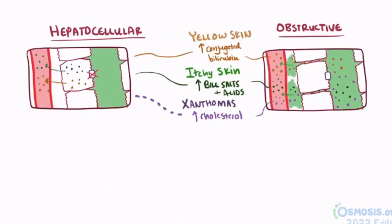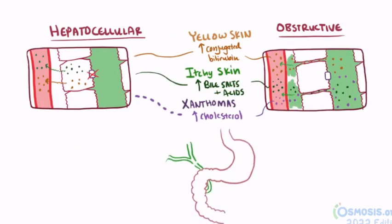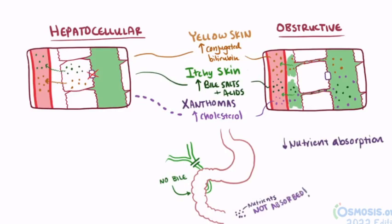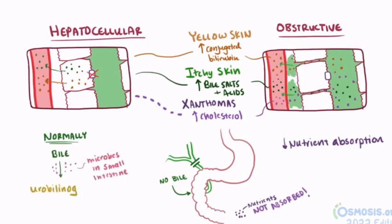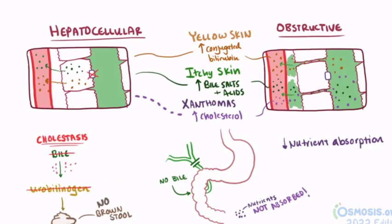If bile flow is blocked or reduced and is being rerouted everywhere except the small intestine, you might also expect a reduction in nutrient absorption, since bile usually helps emulsify fats and make them easier to absorb. Also, when bile gets into the small intestine, some of that conjugated bilirubin is converted by microbes in the gut to urobilinogen, which contributes to the brown color in stool. So if less bile and conjugated bilirubin is making it to the gut, the stool will likely take on a much lighter color. A fraction of that urobilinogen is reabsorbed and excreted in the urine, so there will be less in the urine as well.